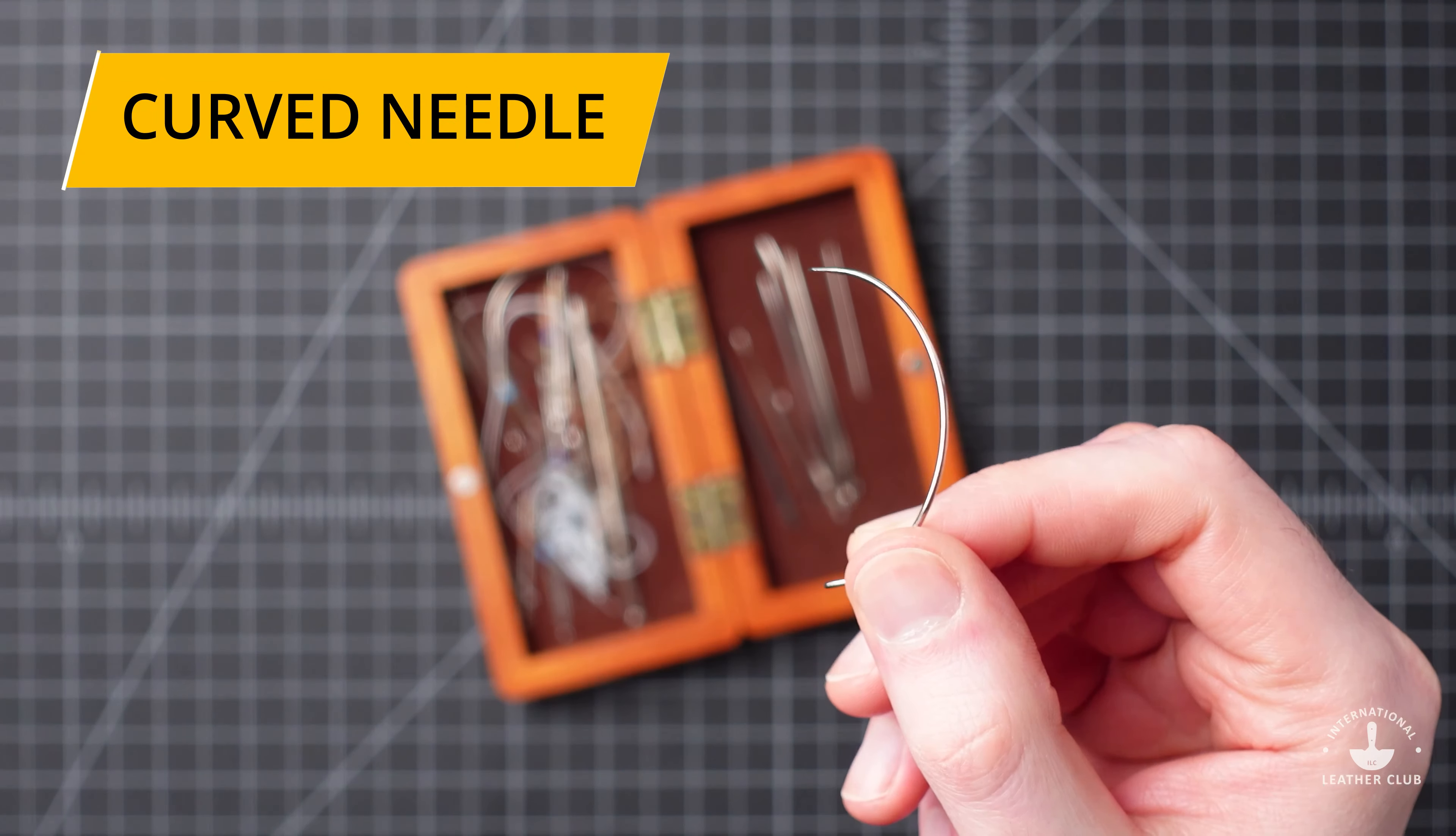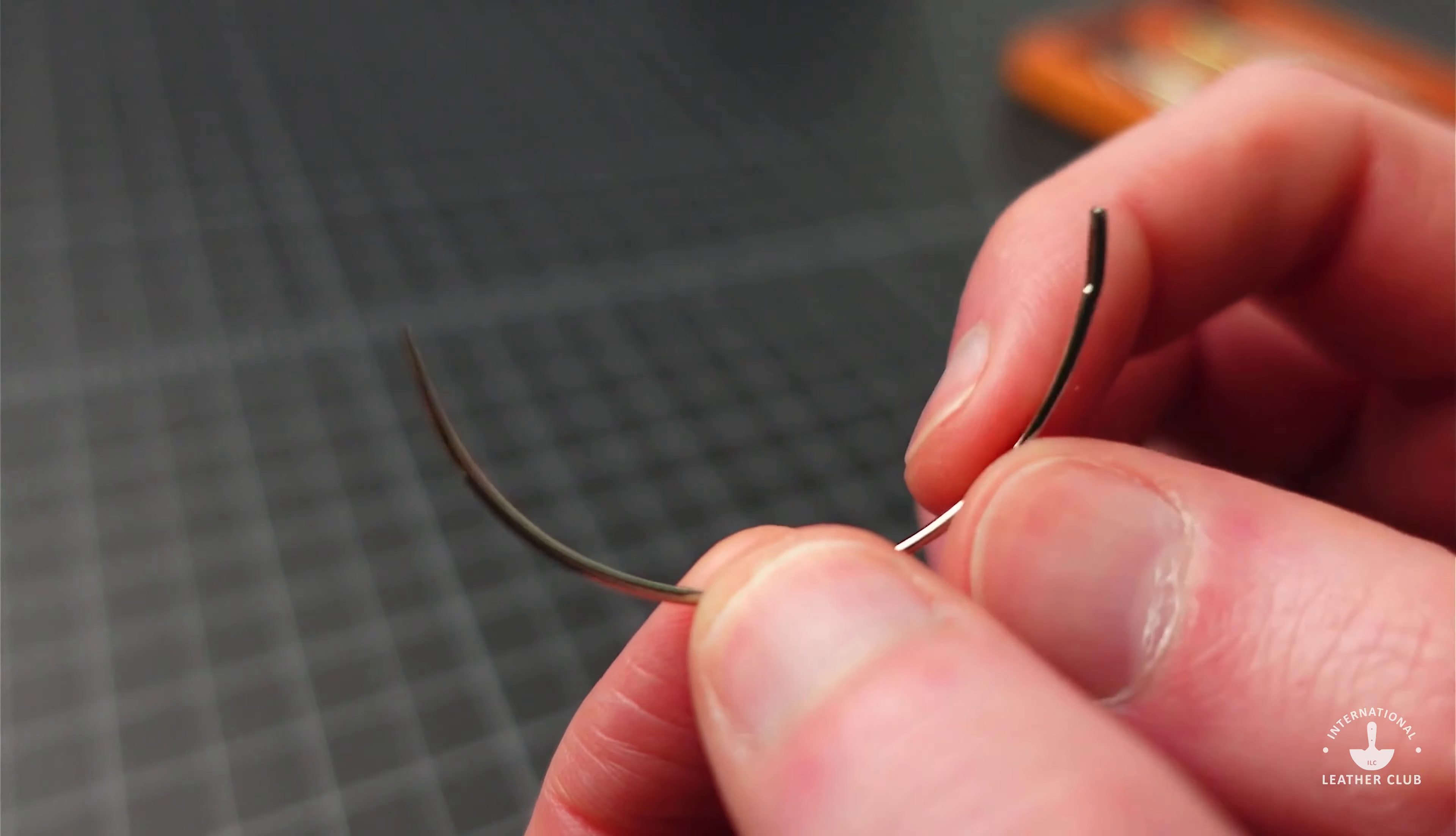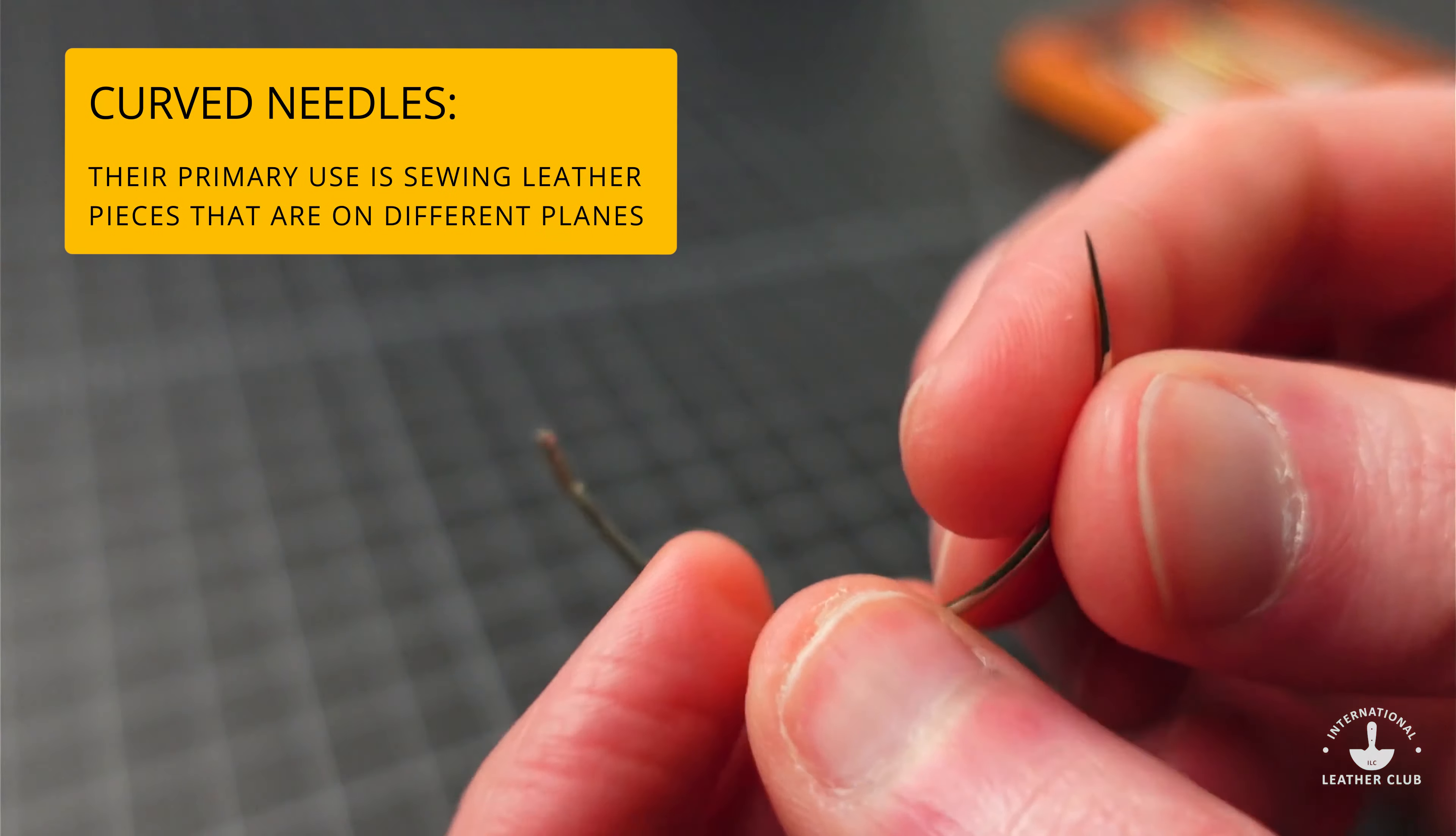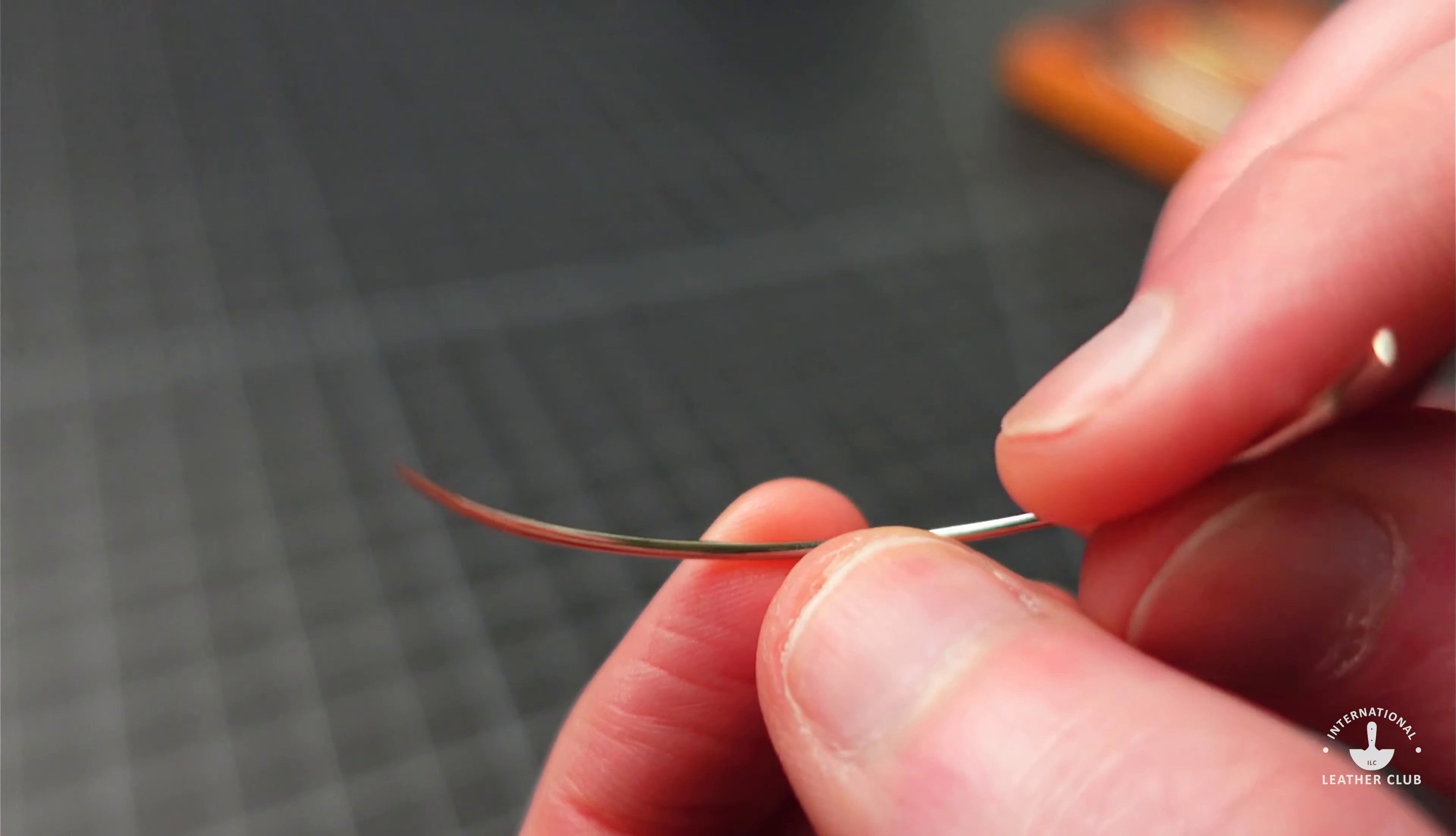The curved needles are similar to harness needles except that they are not straight. Sometimes they are semi-circled, sometimes they are s-shaped, and the sizes are going to vary to accommodate different thread thicknesses. Their primary use is sewing leather pieces that are on different planes and also through heavy thick materials.